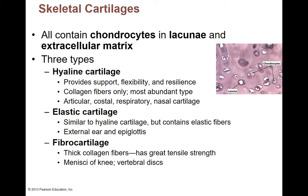Elastic cartilage is very similar to hyaline cartilage — it still has collagen fibers — but it also has elastic fibers. When you pull elastic and let go, it bounces right back. So elastic cartilage is more rubber-band-like. This is your external ear, which you can pull and it bounces back easily. Your epiglottis, which sits there and bounces back and forth when you're eating versus breathing, is also made of elastic cartilage.